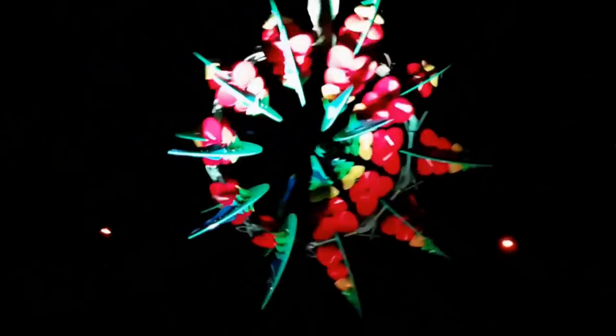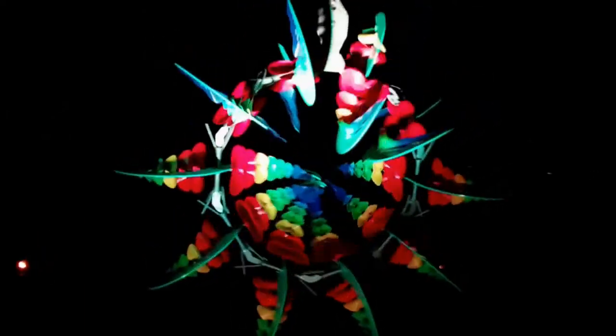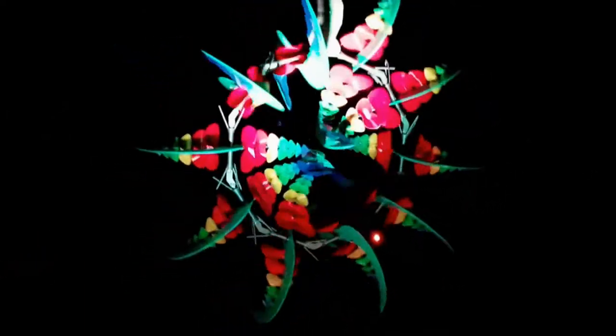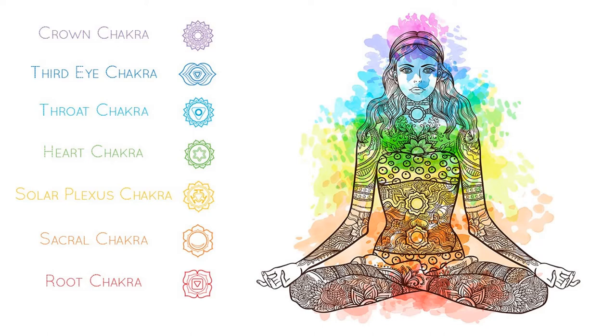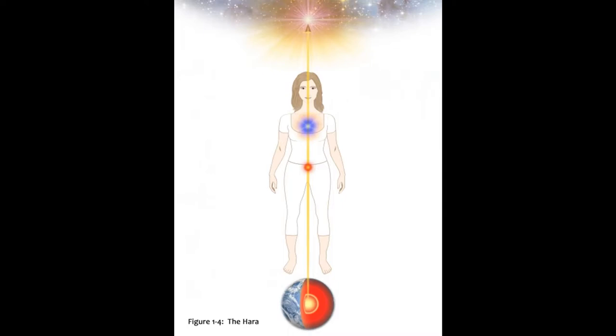The word chakra, literally translated from Sanskrit, means wheel or disc, but is referring to a concentrated vortex of energy, of which there are seven running along the spine, up through the top of the head. This line is also known as the hara line.